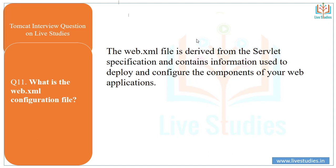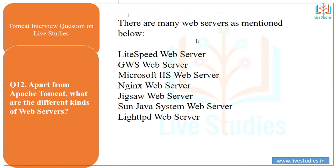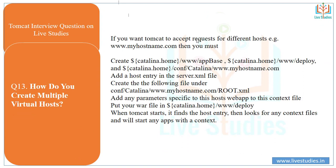Another question: what is the web.xml configuration file? The web.xml file is derived from the servlet specification and contains information used to deploy and configure the components of your web application. Apart from Apache Tomcat, other web servers include LiteSpeed web server, GWS web server, Microsoft IIS web server, Nginx web server, GlassFish web server, Sun Java System web server, and lighttpd web server.